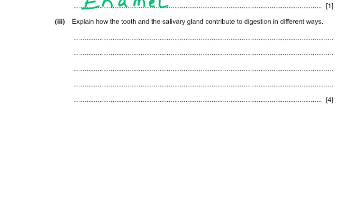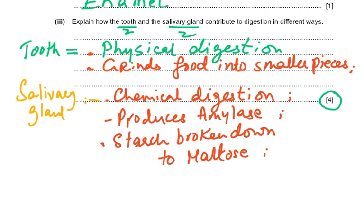This question is worth four marks — two marks for the tooth and two marks for the salivary gland, so always read the question carefully, look at the marks, and then write. For the tooth: physical digestion (one mark), and grinds or breaks up food into smaller pieces (second mark). For the salivary gland: chemical digestion, produces amylase, amylase is an enzyme, and starch is broken down to maltose. If you didn't remember the word amylase, you could say the salivary gland produces an enzyme that breaks down starch to maltose.